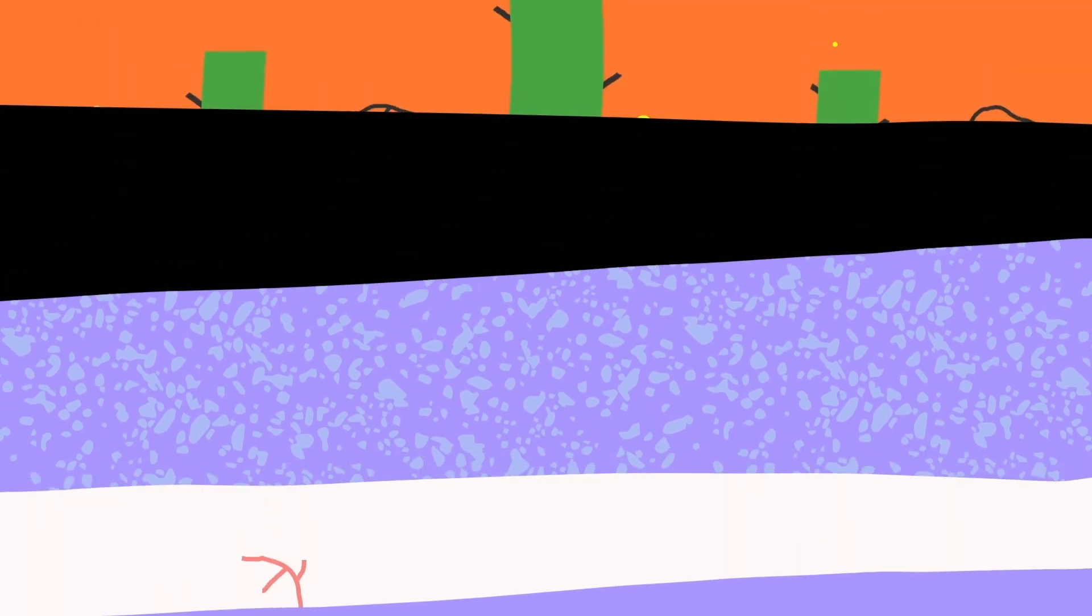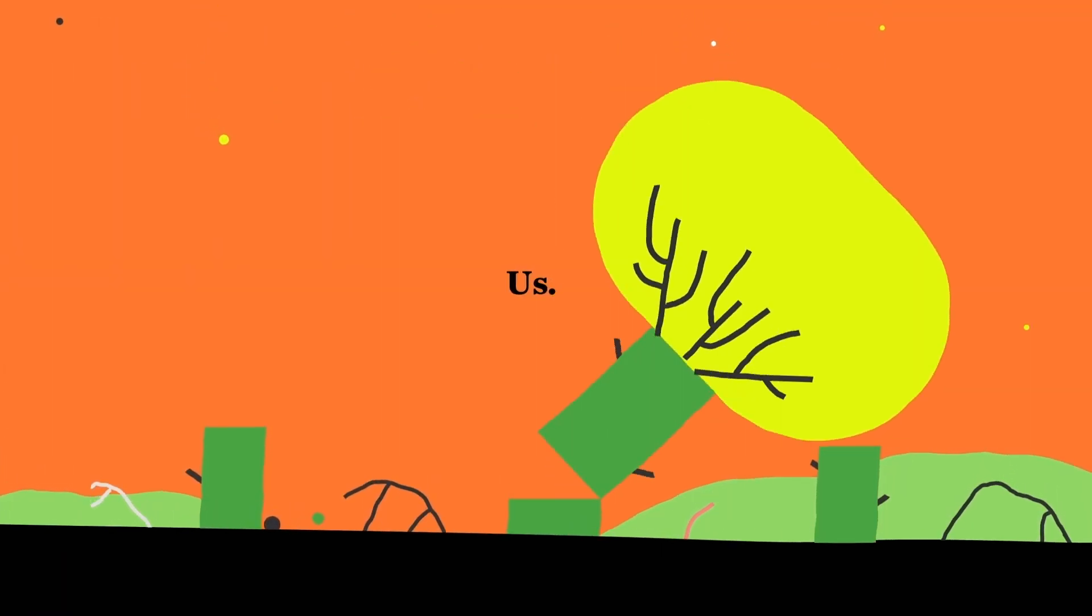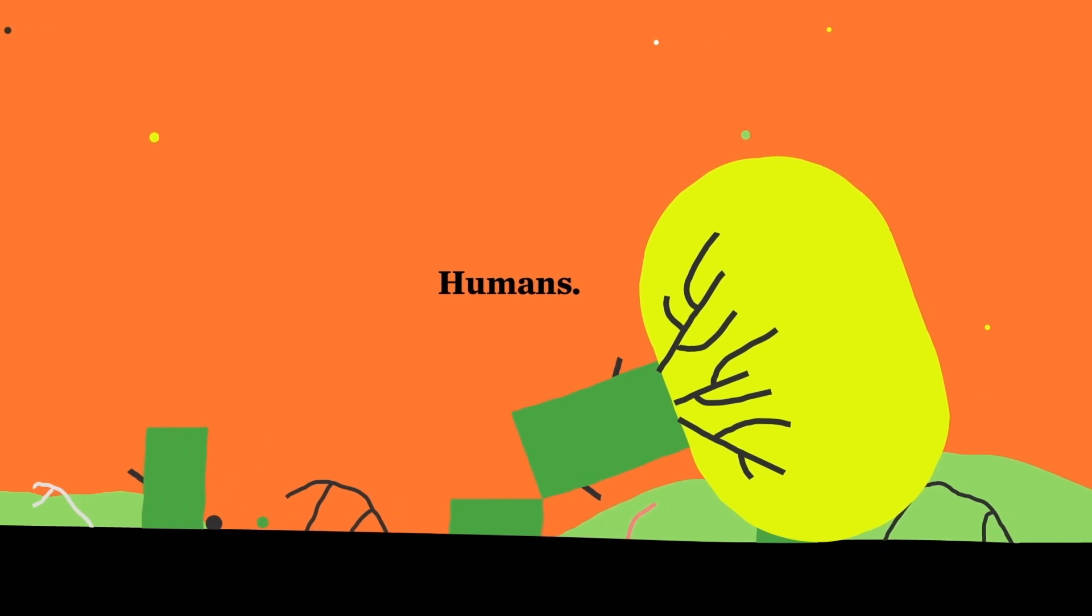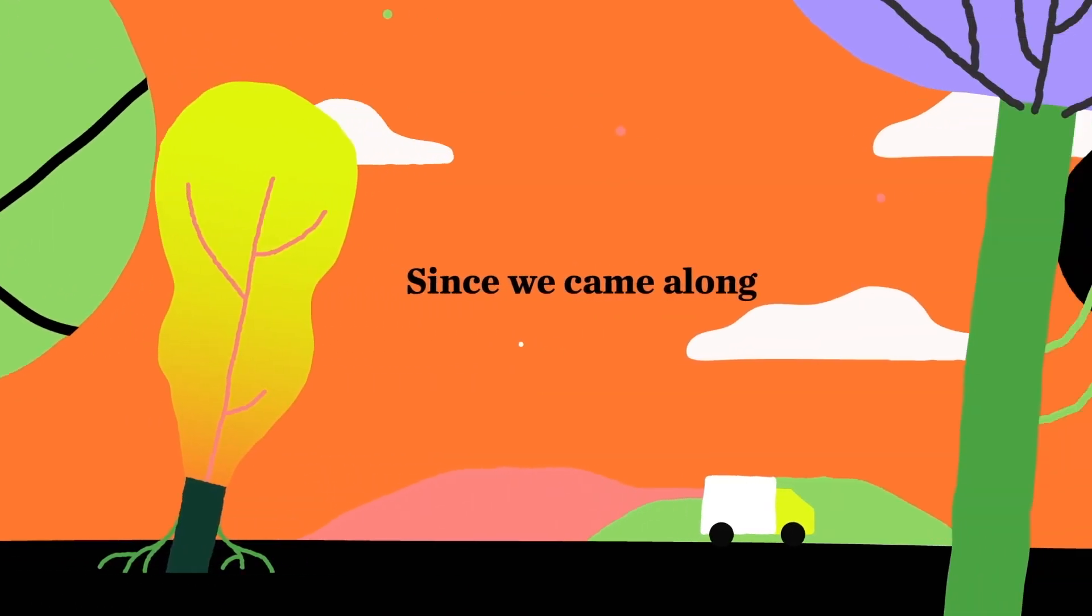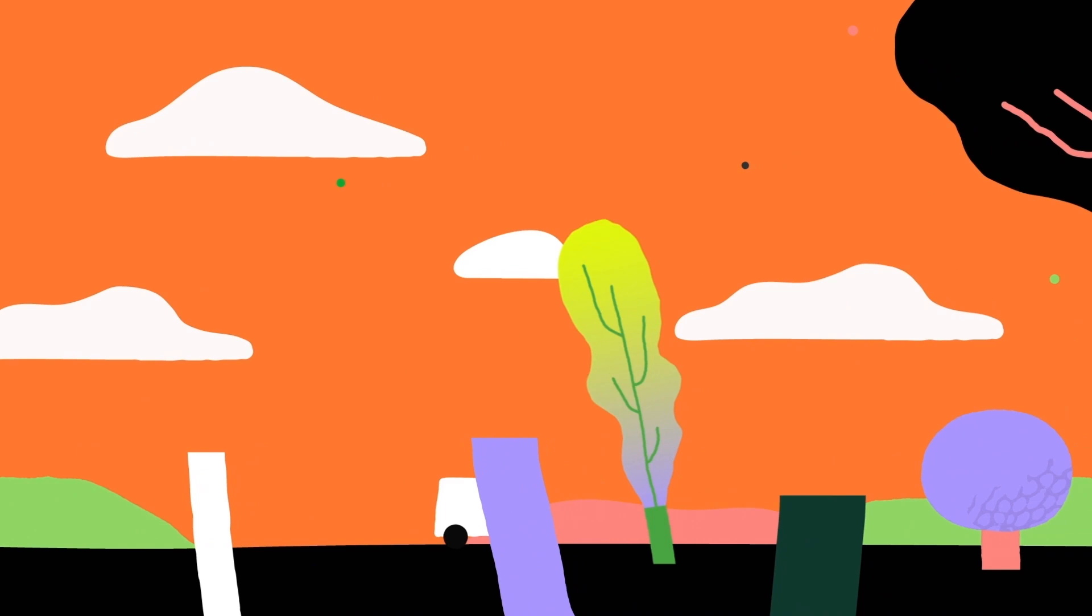Extinctions are rising faster than ever before. The difference? Us. Humans. Since we came along, species have been dropping out a hundred times faster than the natural rate.